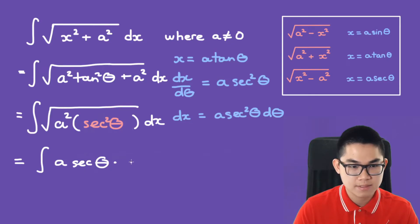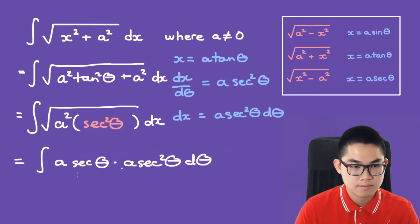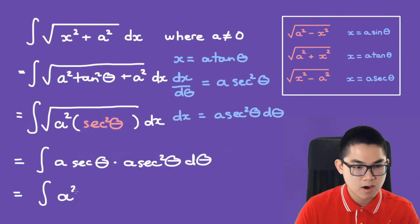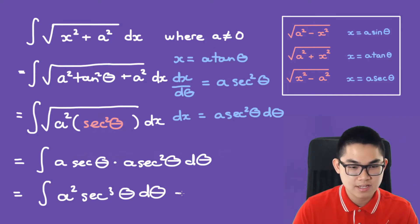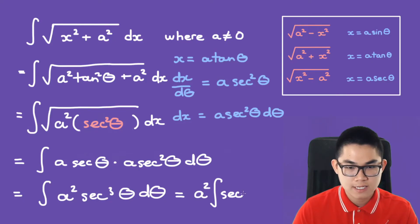We multiply by dx, which is a times secant squared times d theta, giving us a squared times secant cubed. And since a squared is only a constant, we can move it outside of the integral.